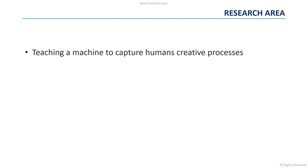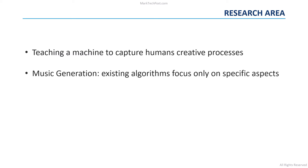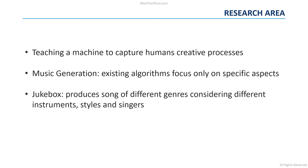The idea of teaching a machine to capture humans' creative processes like music composition has fascinated researchers for many years. However, existing algorithms used to automatically generate music capture only specific aspects of music generation. Jukebox instead can produce songs of different genres of music, capturing melody, rhythm and composition for a wide set of instruments, styles and singers.